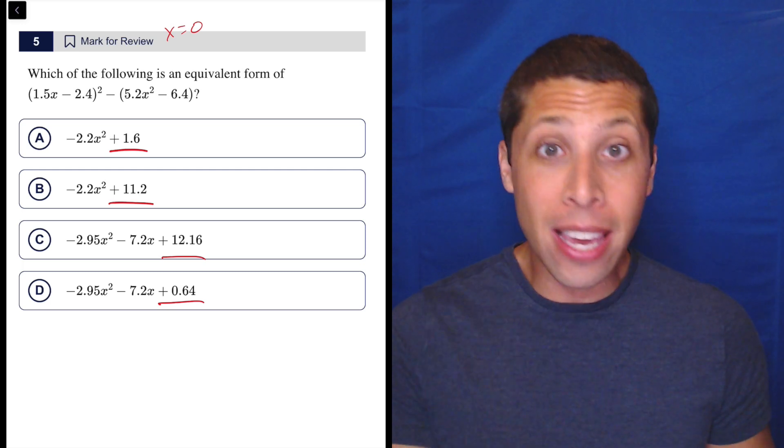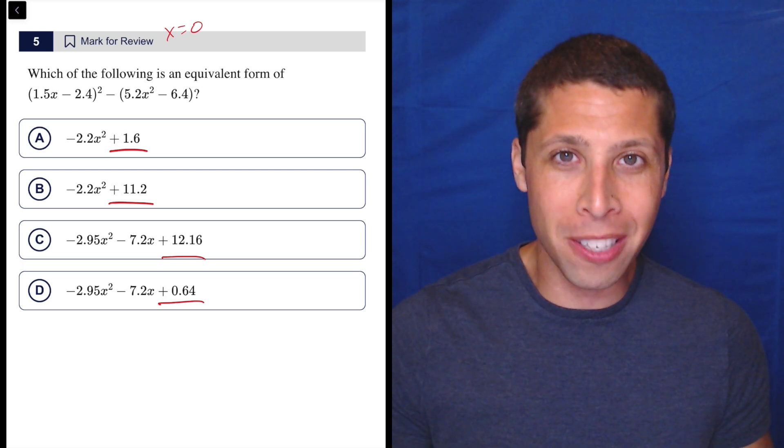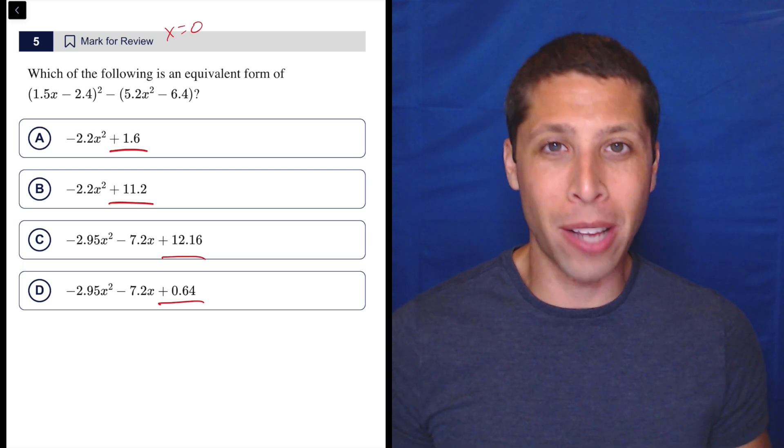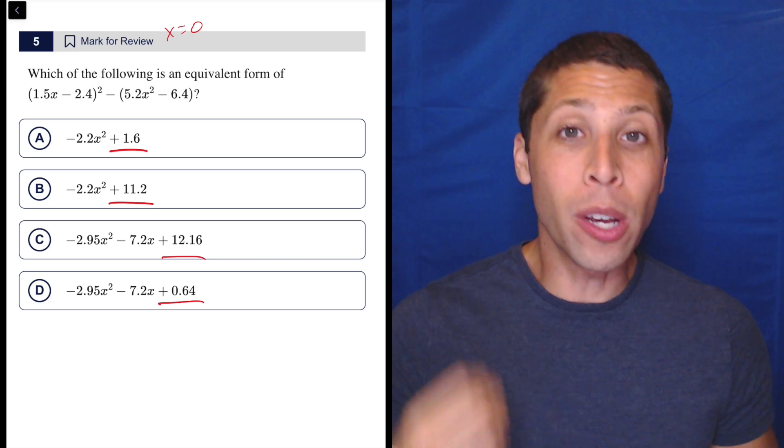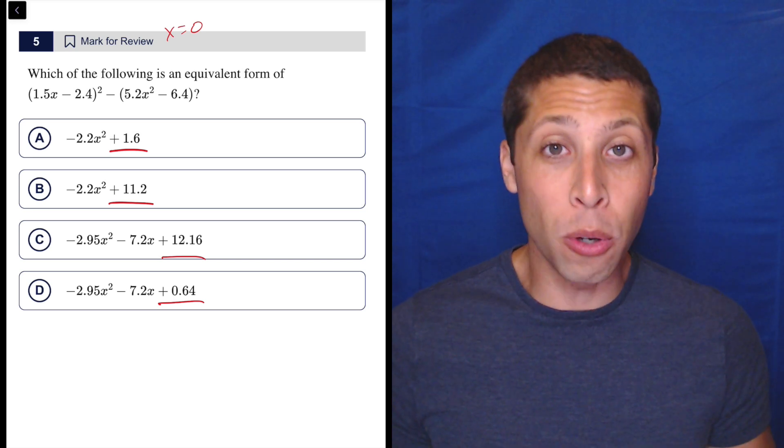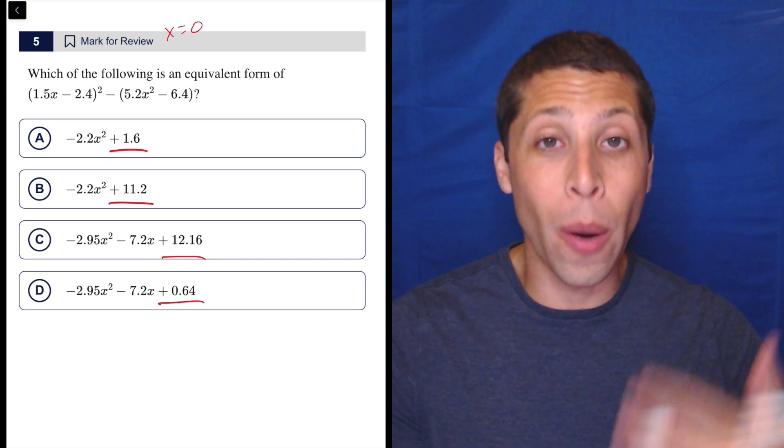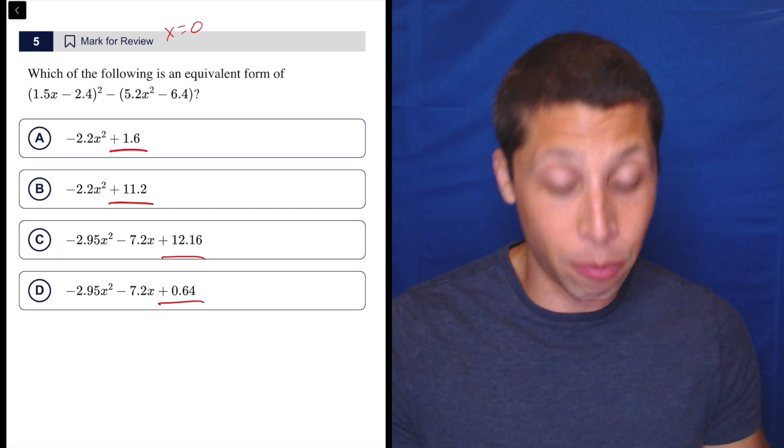So I think a big key with Arithmetize is including the answer choices in your scan of the question. What are we given? You can quickly determine whether Arithmetize is the right move based on those answer choices if you know how to read them correctly.